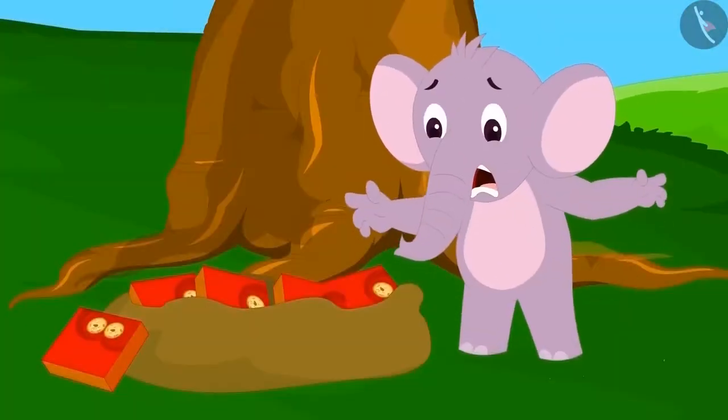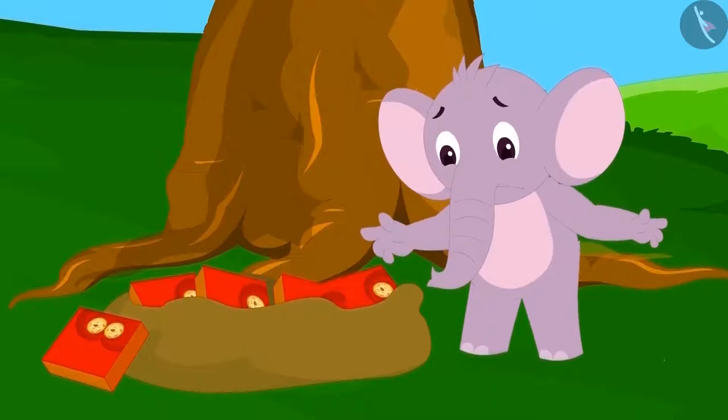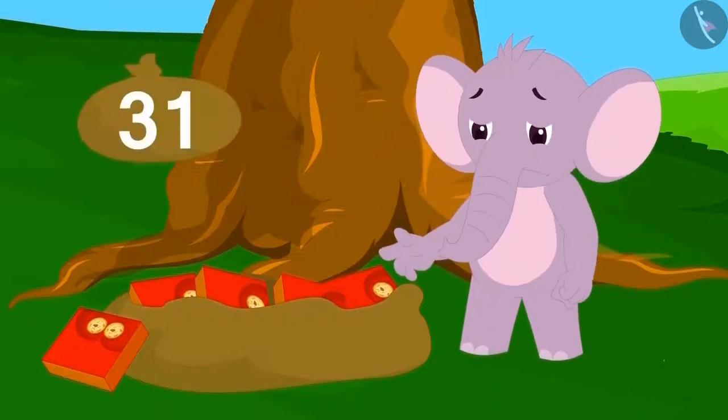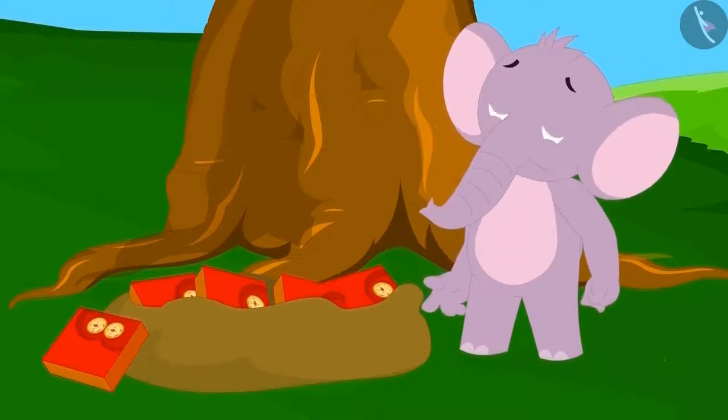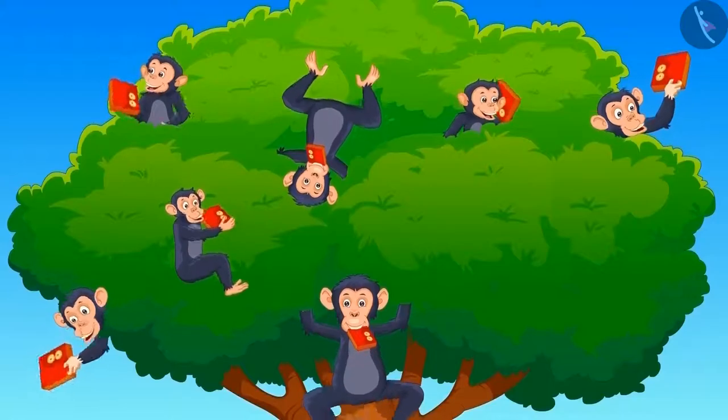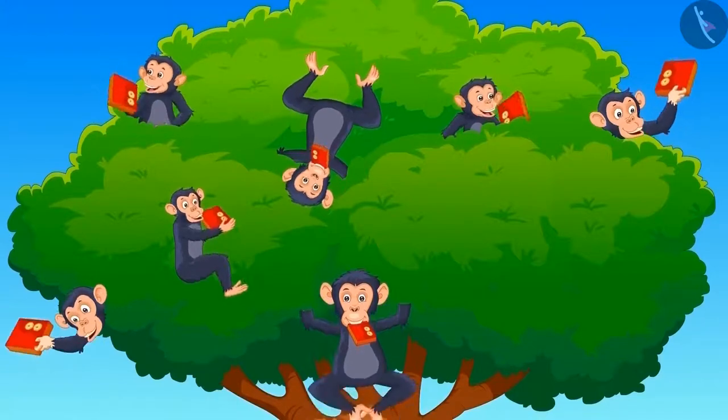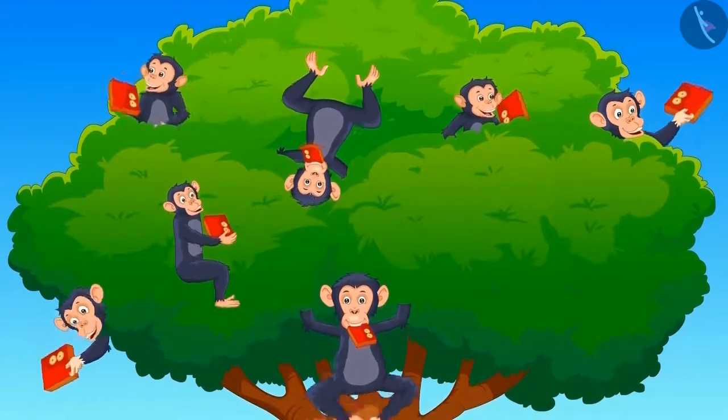When Appu woke up, he saw that he now had only 31 boxes of sweets. When he looked up, he saw that there were lots of monkeys on the tree eating sweets from his boxes.